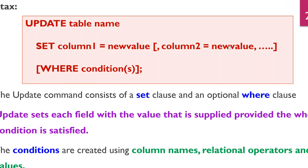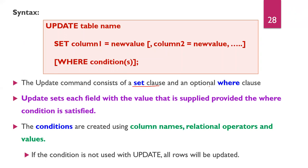The UPDATE command consists of a SET clause and an optional WHERE clause. The SET clause is compulsory — it sets each field with the value that is supplied provided the WHERE condition is satisfied. The WHERE clause specifies which rows to update; without it, all rows are updated. Conditions in the WHERE clause are created using column names, relational operators (equal to, not equal to, greater than, greater than or equal to, less than), and values.